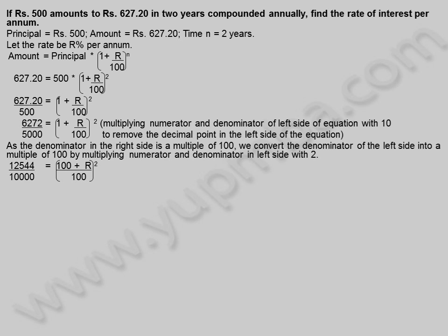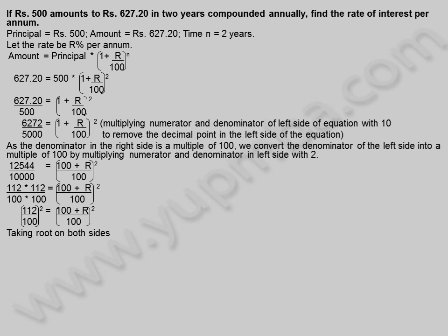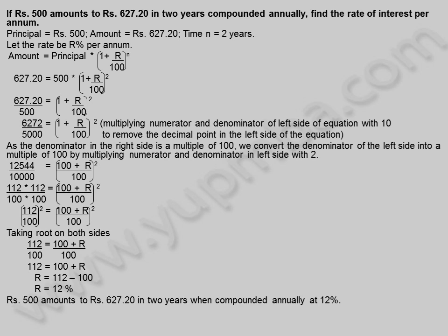112 into 112 divided by 100 into 100 is equal to 100 plus r divided by 100 whole square. So 112 by 100 whole square equals 100 plus r by 100 whole square. Taking root on both sides: 112 by 100 is equal to 100 plus r divided by 100. Therefore 112 is equal to 100 plus r, so rate is equal to 112 minus 100, which gives rate equal to 12 percentage. 500 rupees amounts to 627.20 rupees in 2 years when compounded annually at 12 percentage.